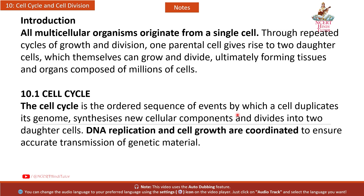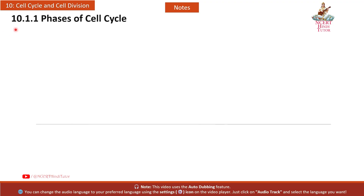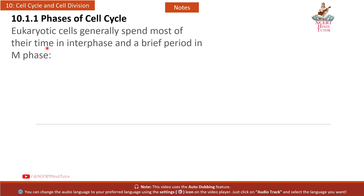10.1 Cell Cycle: The cell cycle is the ordered sequence of events by which a cell duplicates its genome, synthesizes new cellular components, and divides into two daughter cells. DNA replication and cell growth are coordinated to ensure accurate transmission of genetic material.